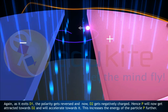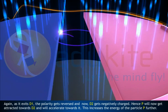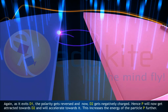Again, as it exits D1, the polarity gets reversed, and now D2 gets negatively charged. Hence, P will now get attracted towards D2 and will accelerate towards it. This increases the energy of the particle P further.